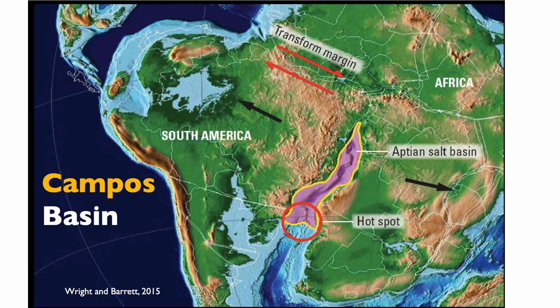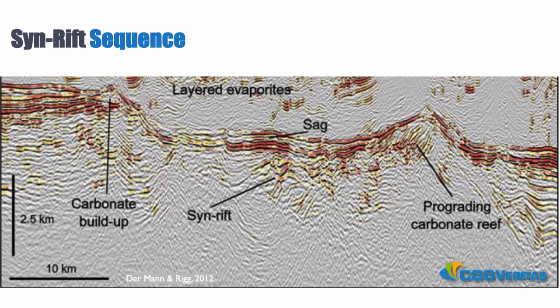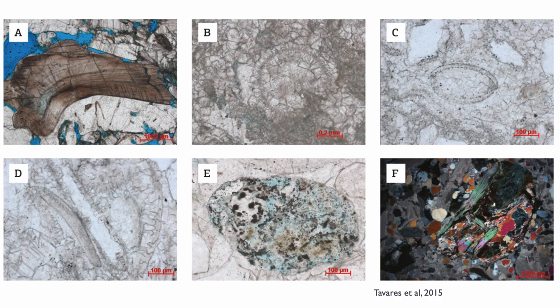C factories are not very common as reservoirs, but there is one exception — Brazil. In the Campos Basin, the opening of the South Atlantic created an isolated basin, essentially a giant alkaline lake in the Lower Cretaceous. During the synrift sequence, the Barra Velha Formation was formed. These carbonates are skeletal components — effectively beach facies — and are one of the types of reservoirs found in the synrift.